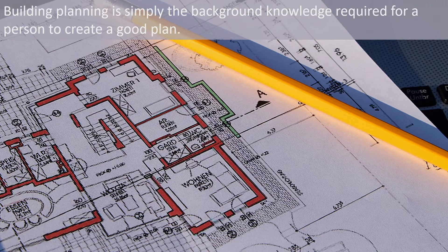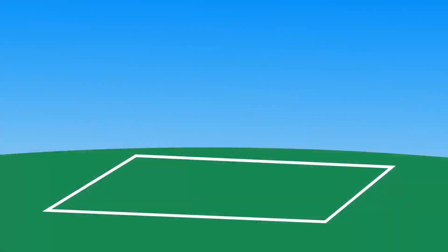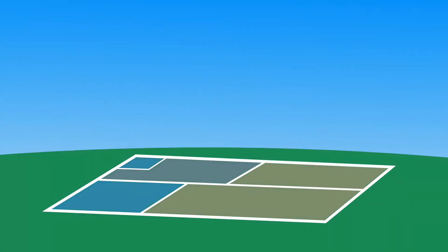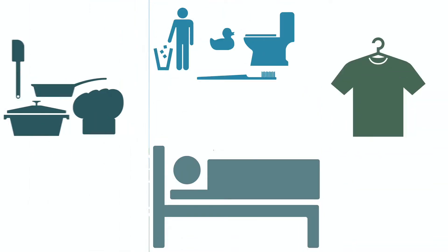In the process of building planning, you divide an area of site into different rooms. We need different rooms in a building so that we can perform different activities in it.